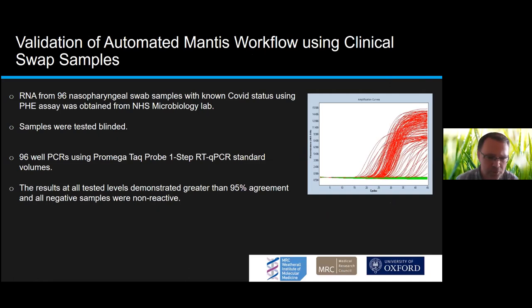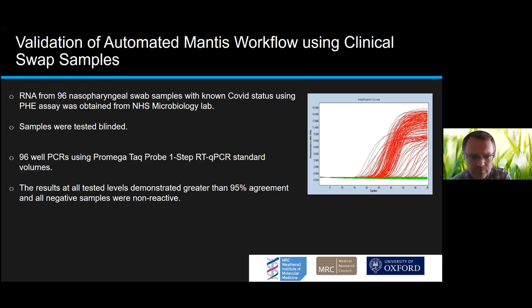We were doing all this in collaboration with our local clinical lab at the John Radcliffe Hospital microbiology lab. They were kind enough to provide us with nasal RNA which they had purified using the QIAgen system, and this enabled us to validate our automated workflow. Testing 96 samples of known COVID positives and negatives, we found very high agreement and all the negative controls were negative. We're quite confident that the Mantis workflow was working acceptably.